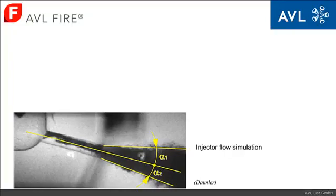At high pressures, fuel is injected through the nozzle tip and finally through the spray hole into the combustion chamber. Due to the high pressure difference, cavitation mass transfer occurs, vapor is generated inside the orifice, and it will block part of the outlet area — the so-called effective area into the cylinder.